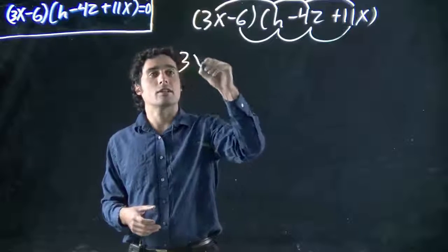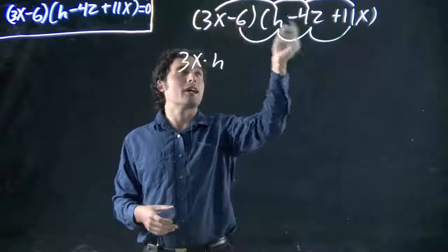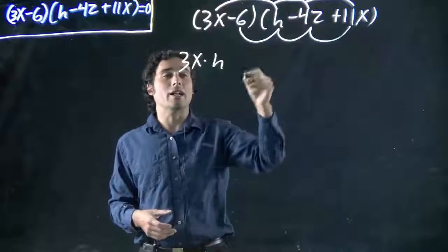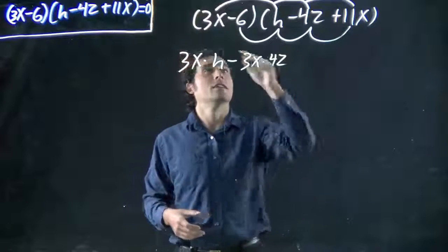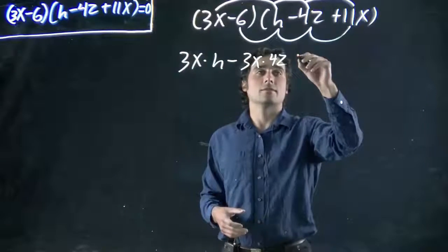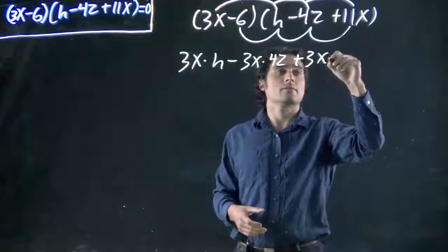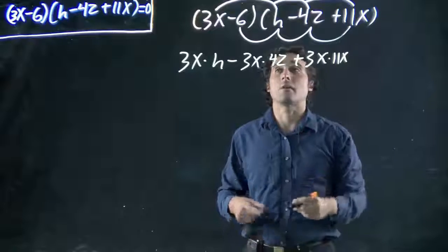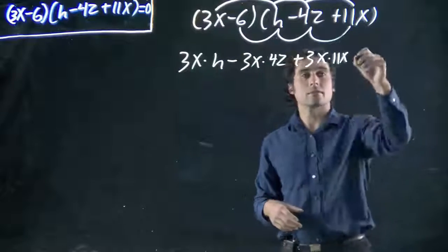So we get 3x times h, and then 3x times 4z. Well, we got a minus, so we got to put a minus there. 3x times 4z, and then 3x times 11x. And that's a plus. Now we go through and do the minus 6 part. Might run out of room, didn't think this through.